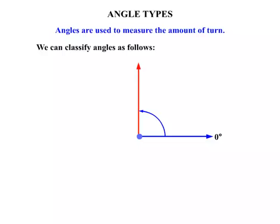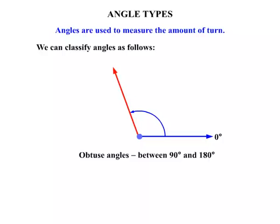We'll go a little bit further now. If we keep on going, that now is known as an obtuse angle. It's between 90 degrees and 180 degrees. So we keep on going. All of these are examples of obtuse angles.